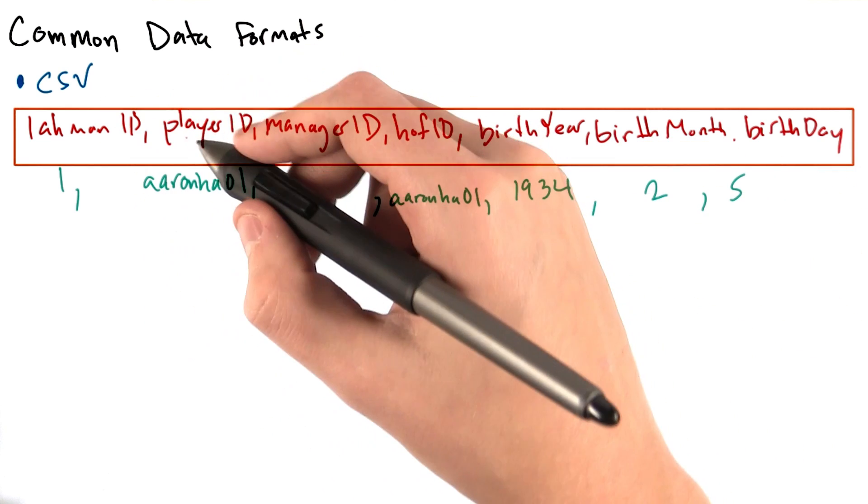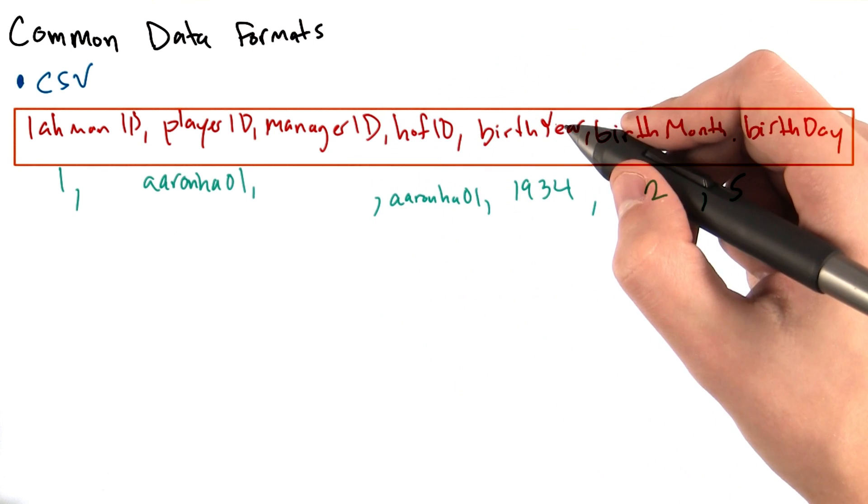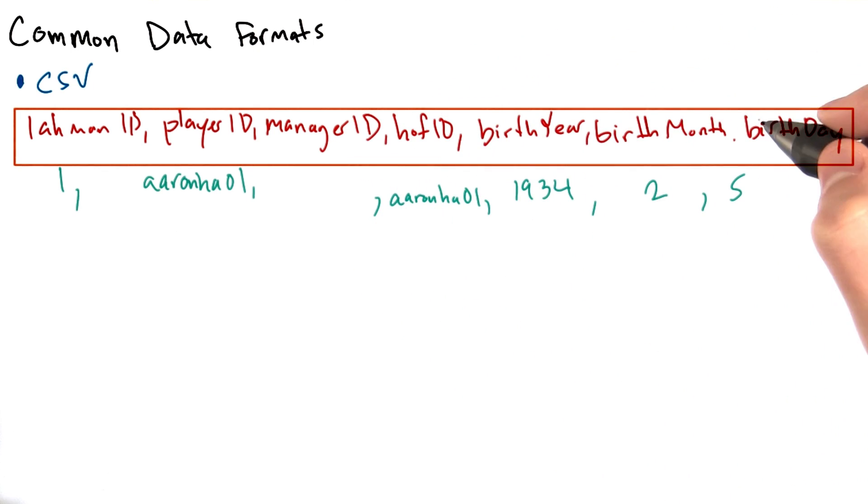The Laman ID, the player ID, the manager ID, etc. Then we'll see birth year, birth month, birth day, and then a bunch of other statistics.